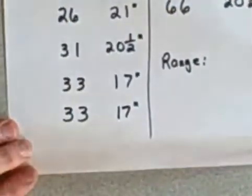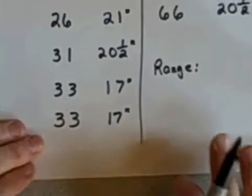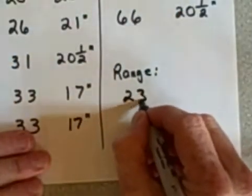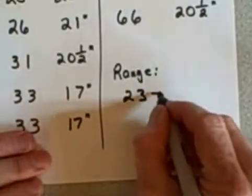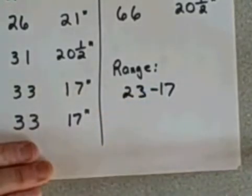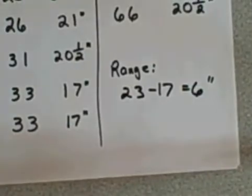So log number 33 occurred twice. Of course it was still 17 inches both times I measured it. Here's our information. Now I'm going to calculate my range of values. My largest value was 23, my shortest length was 17. To find my range I simply subtract 17 from 23, so the range is 6, or in this case 6 inches.